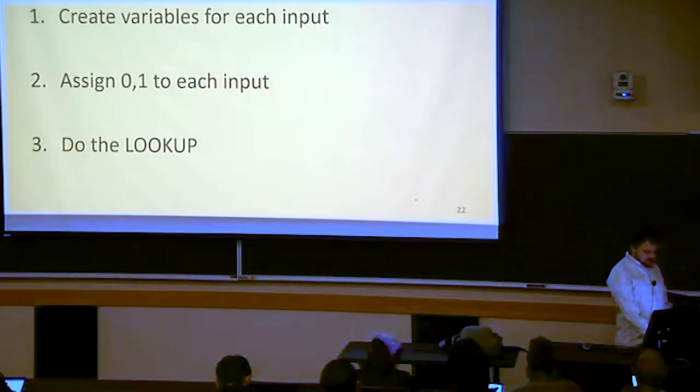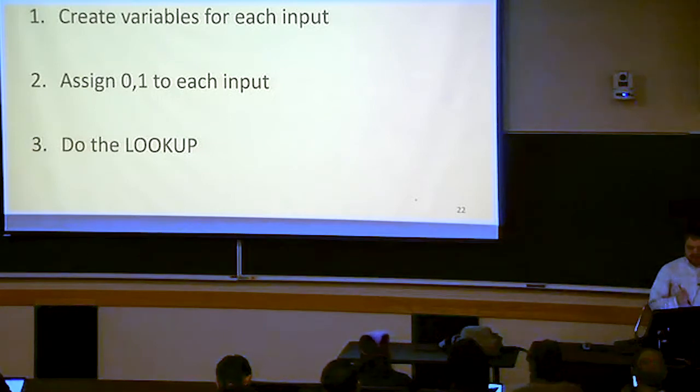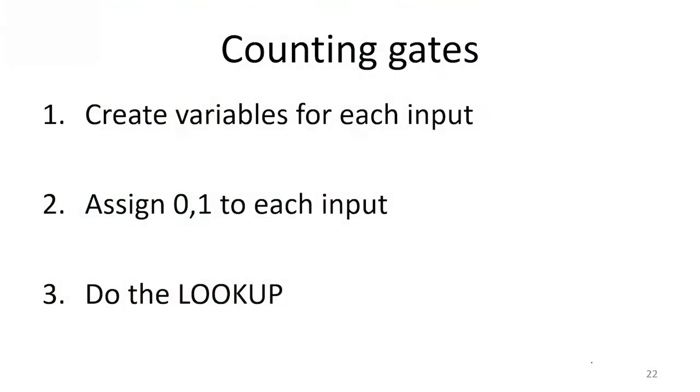So let's see where this comes from. Basically there's three steps to implementing our function. The first step is to create a variable for every input. The second step is to assign 0 and 1 to each of those variables. And the third is to actually do the lookup.